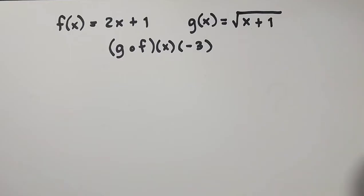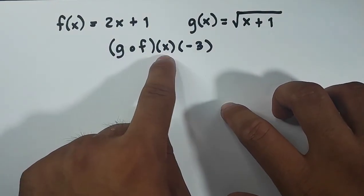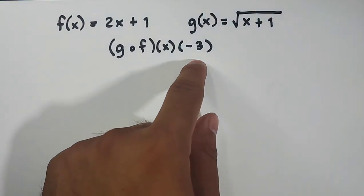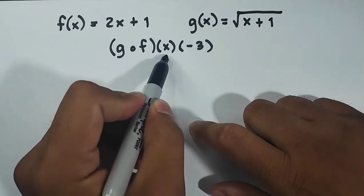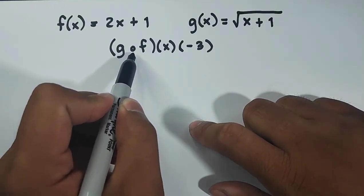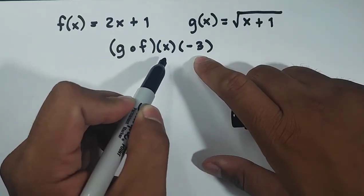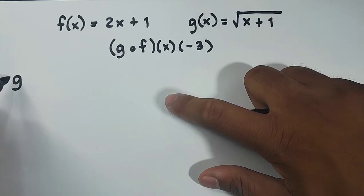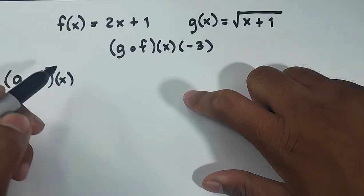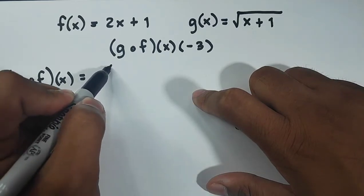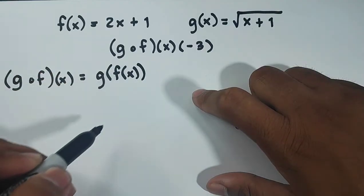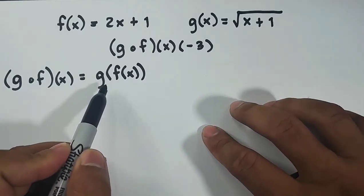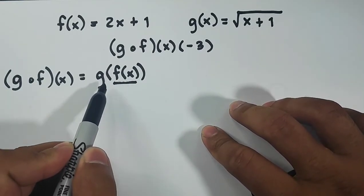So I will give you the two different methods or the step-by-step solution on how to do this. First, we need to find first g of f of x before we plug in negative 3. So paano po ba yan? Parang ganito lang. Kung meron kang g of f of x, that's the same as g of f of x. Ibig sabihin nito, guys, yung function f natin, your function f, your function f is the input for the function g.